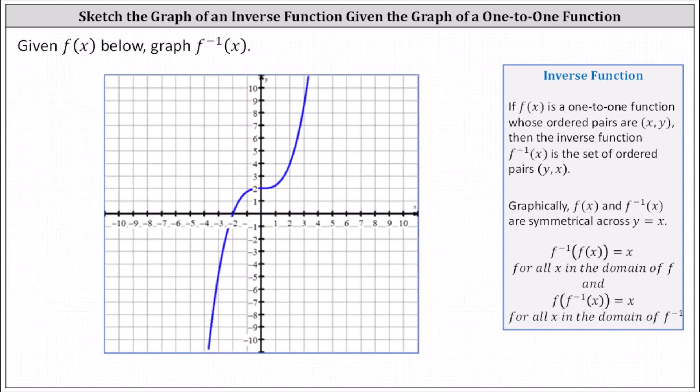We are given the graph of f(x) below, and we're asked to graph f inverse of x. If f(x) is a one-to-one function whose ordered pairs are (x, y), then the inverse function f^(-1)(x) is the set of ordered pairs (y, x). Which means if we find several points on the graph of f(x) and then interchange the x and y values, the new ordered pairs will give us points on the graph of f inverse of x.